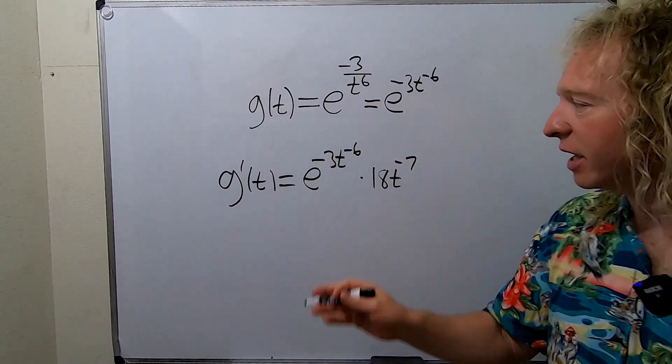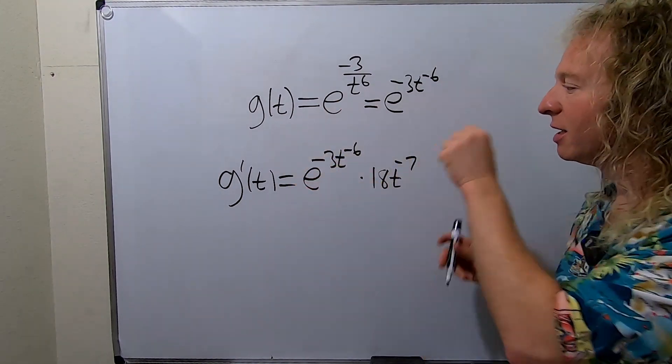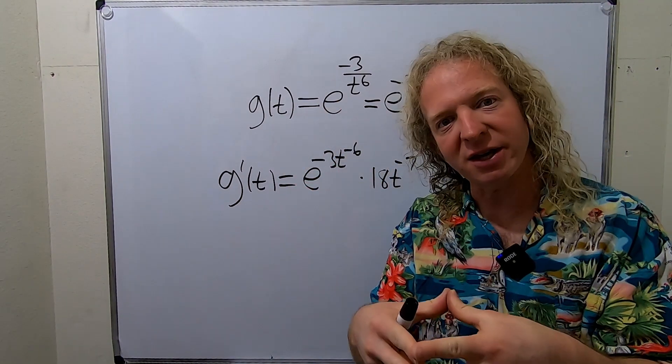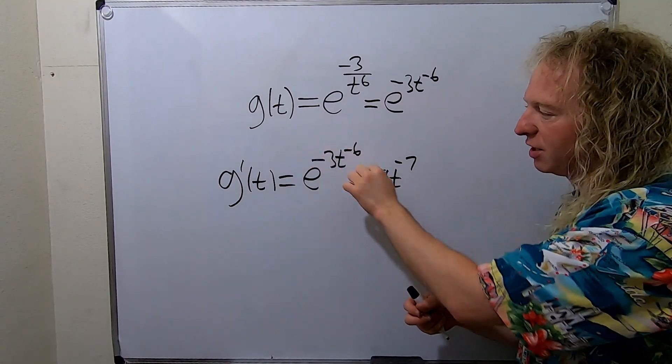Again, the derivative of e to the x is e to the x, so we got this times the derivative of that inside function. So this is our inside function, you just multiply these, that gives you 18, and then you subtract 1.